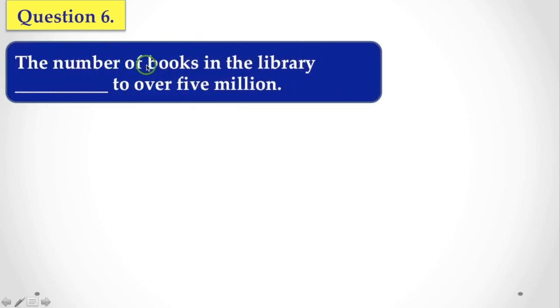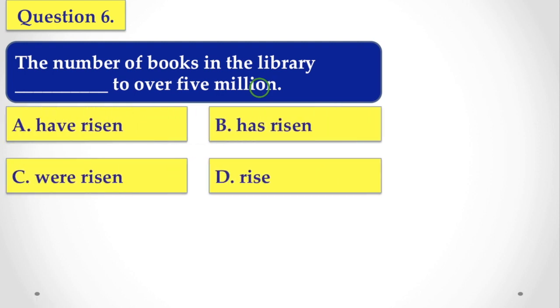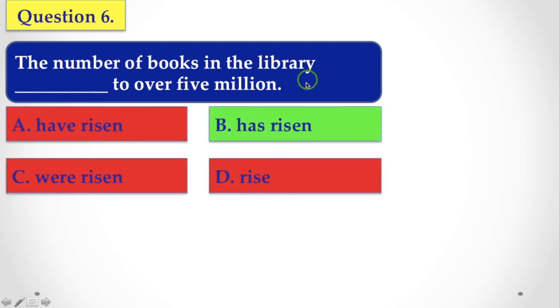Next question for you: The number of books, the number of books in the library to over 5 million. And the options are: have risen, has risen, were risen, and rise. And the correct answer is has risen.